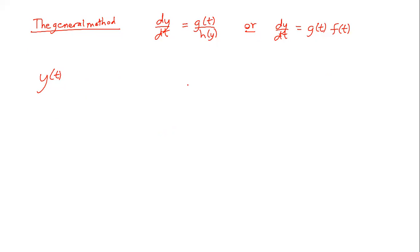The procedure is: separate the variables, integrate both sides, then solve for the solution if you can. One important note: you might not always be able to solve explicitly for y(t). You might be left with an implicit expression — for example, y + y² = something — where you can't get y alone on one side. Also, you need to handle special cases where the function in the denominator equals zero.